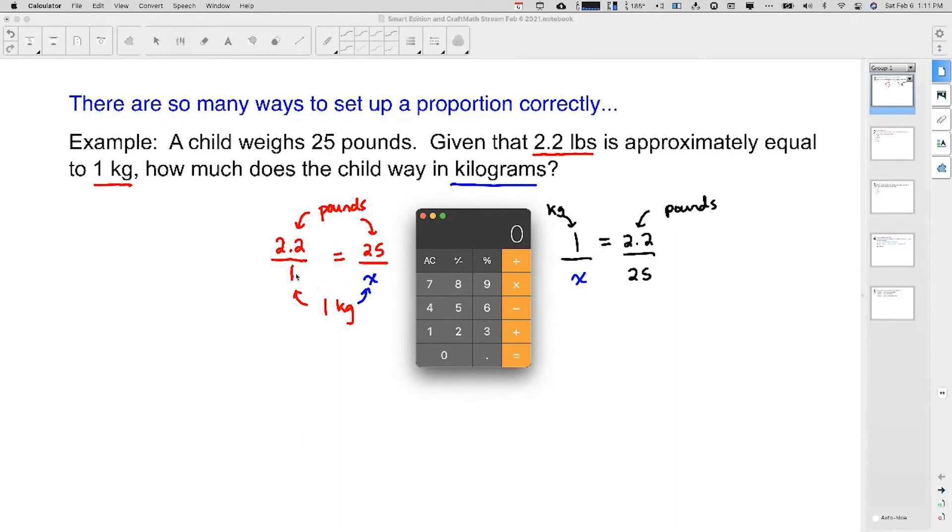If we look at the other cross-product, 1 times 25, it's the same thing. It just looks different. It's all about putting them in the same spot. Either put pounds at the top, kilograms at the bottom, or set up your kilograms on one side and your pounds on the other.